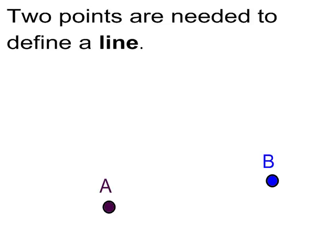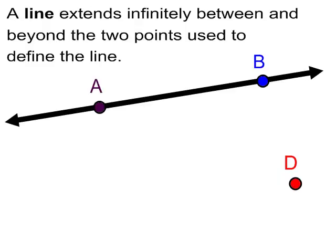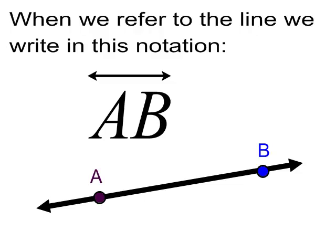Two points are needed to define a line. So there's A and B, and if you extend the line infinitely through it, that's a line. When you refer to that line, you call it with the capital letters A and B, with a line with two arrowheads over top, indicating that the line is extending infinitely through B, that's the arrowhead, and from B through A, infinitely, there's the arrowhead over the A.